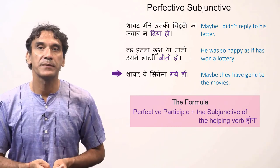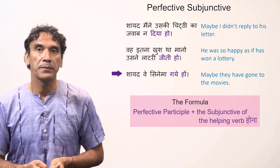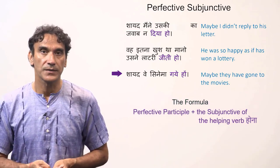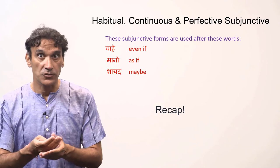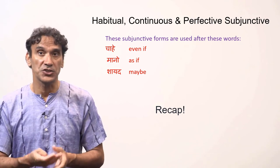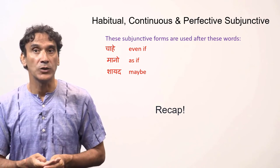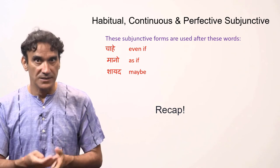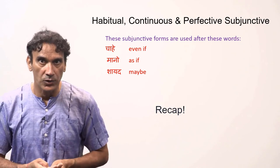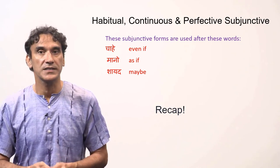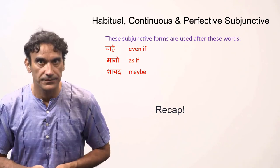Just to recap: whenever you have the phrases 'shayad', 'maano', or 'chahe', use the subjunctive. 'Shayad' means maybe, 'maano' means as if, and 'chahe' means even if. Example: 'shayad veh cinema gaye hon' — maybe they have gone to the movies.